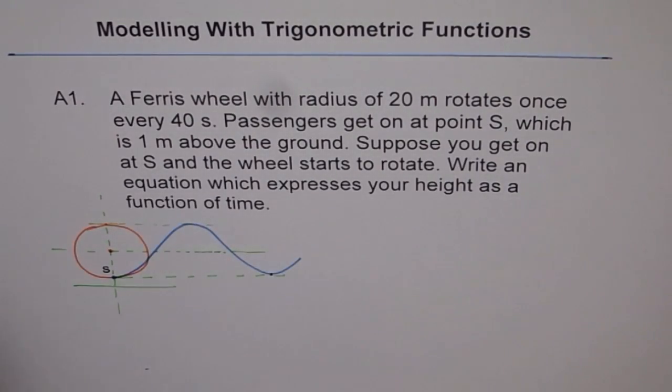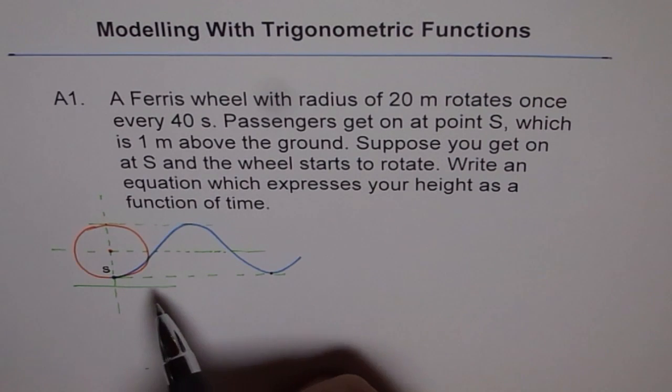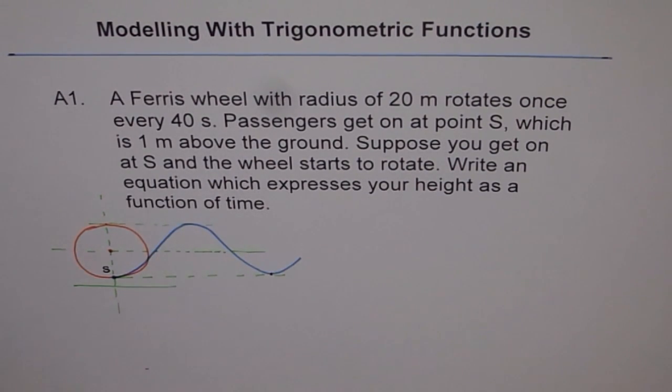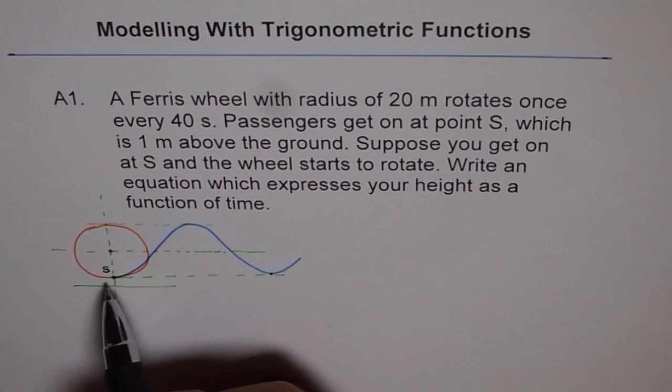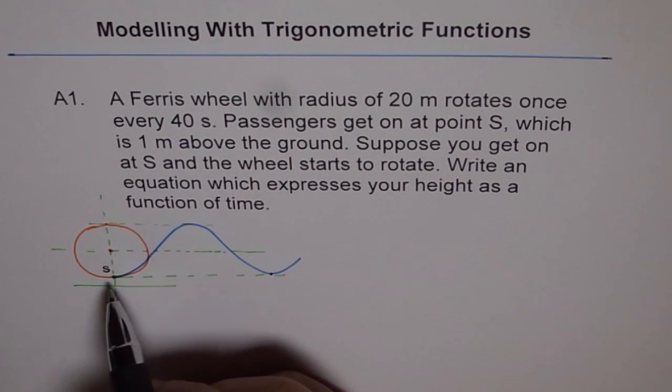Modeling with trigonometric function means we need to represent the height of the person in the form of an equation. Since the graph looks like a sine function, the best way is to write it in the form of a sine or a cosine function. Cosine function starts from maximum, sine starts from the middle value. Here, this is starting from the lowest position. So we can use minus cos of angle without even getting into the phase shift, because calculating phase shift is kind of tricky.